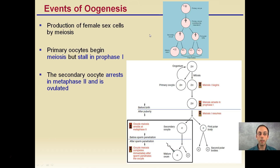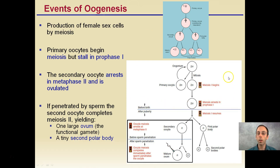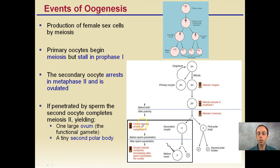Looking at the events to generate these eggs: what's interesting is that before birth, female eggs will be arrested or paused in prophase 1. If you're unsure what prophase 1 is, you may want to go back and review the meiosis slide. The secondary oocyte arrests in metaphase 2 and is ovulated. If penetrated by a sperm, the secondary oocyte completes meiosis 2, yielding one large ovum — which is the functional gamete — and a tiny second polar body. This sequence of events occurs before and after sperm entry, involving the breakdown into polar bodies.